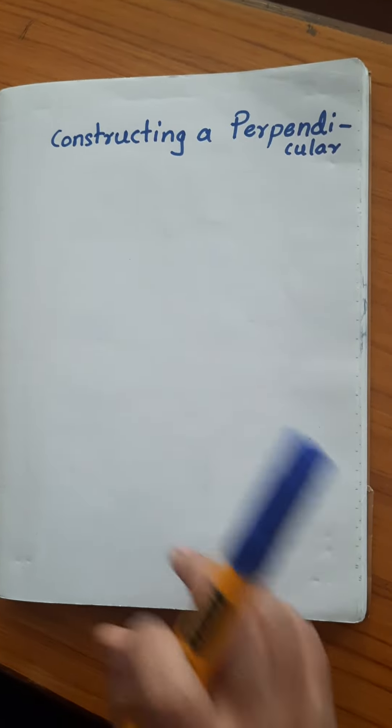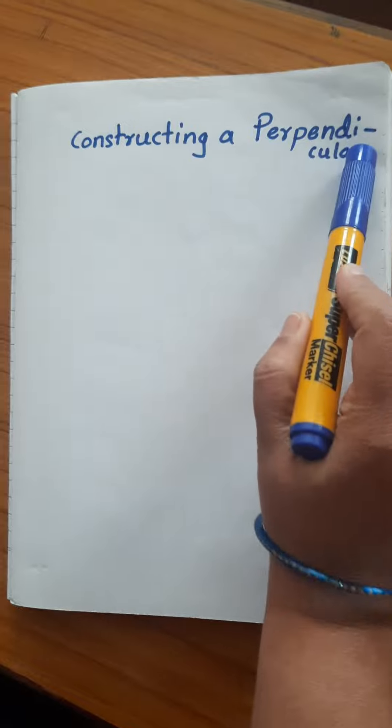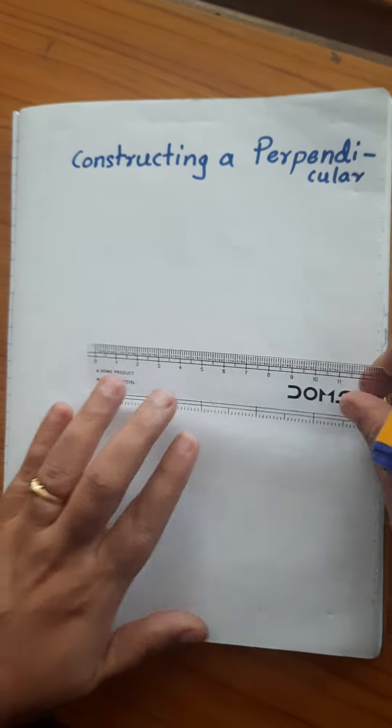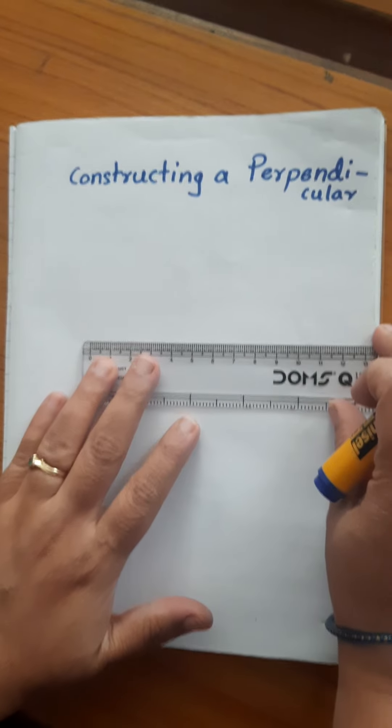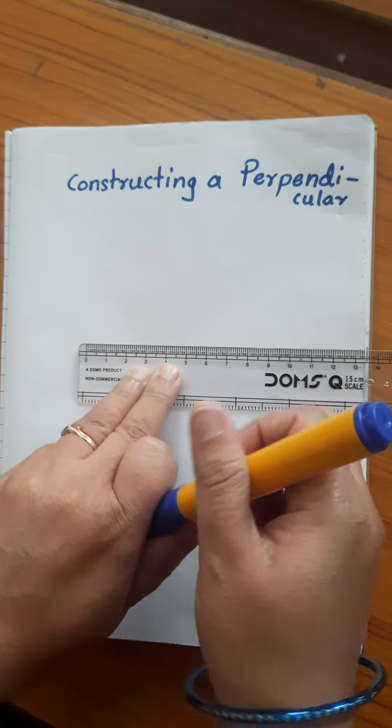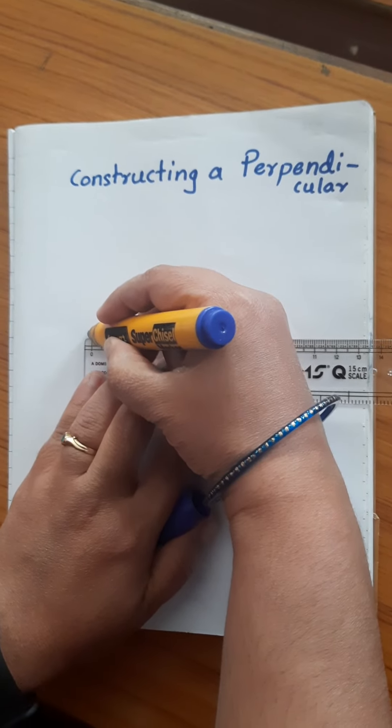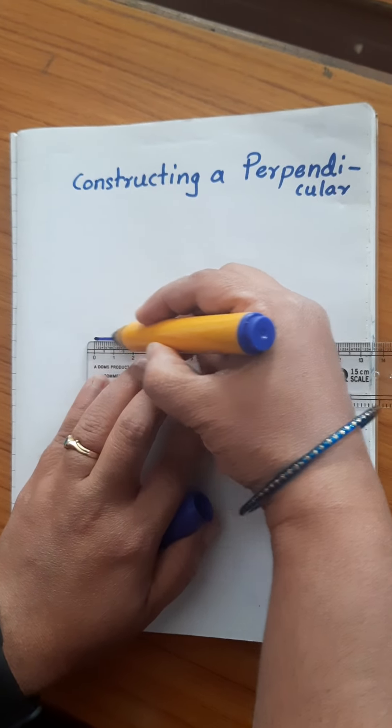Let us learn constructing a perpendicular. When any line or a line segment is given, you should construct a perpendicular in two ways: if the perpendicular point is outside the line or on the line.